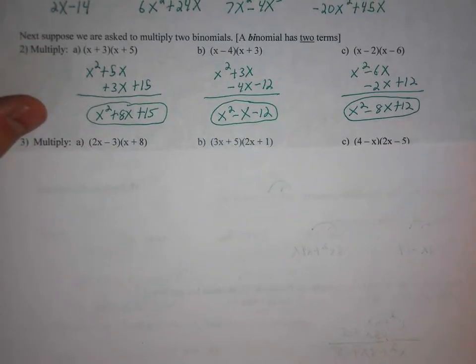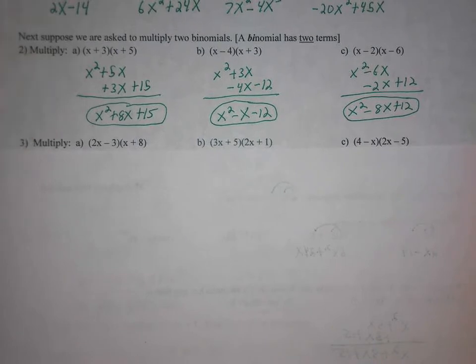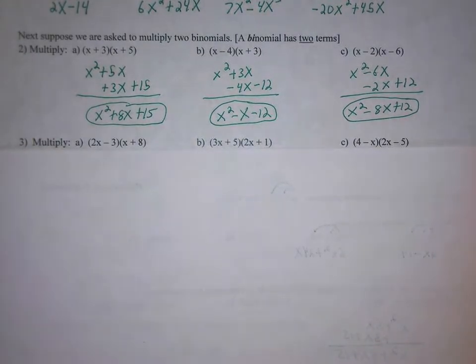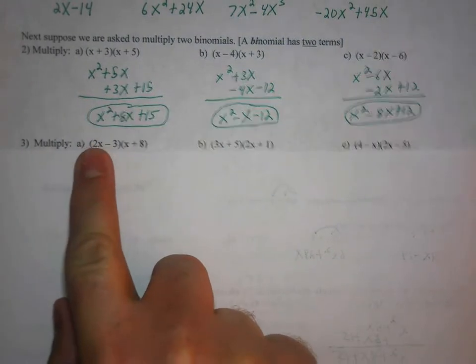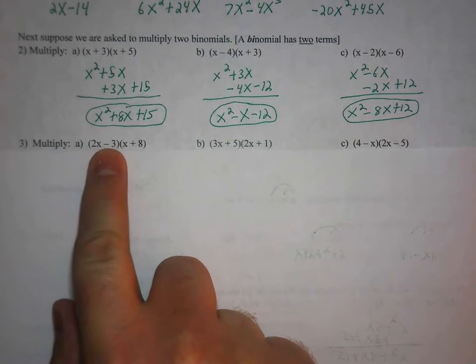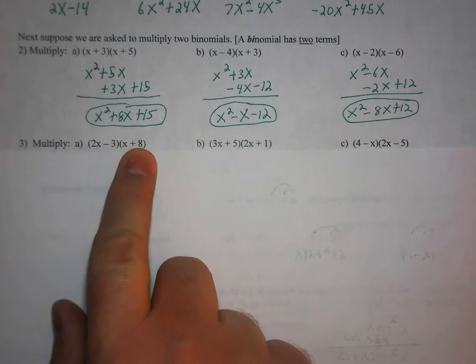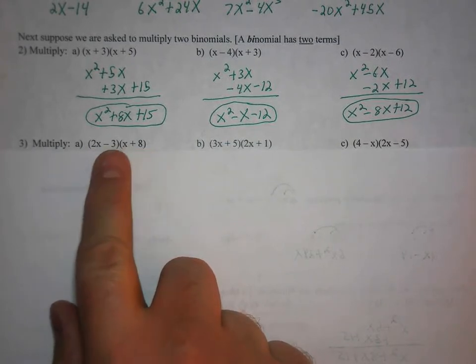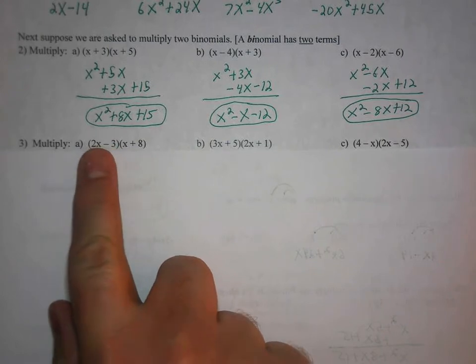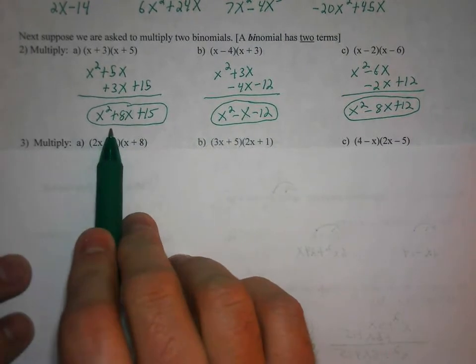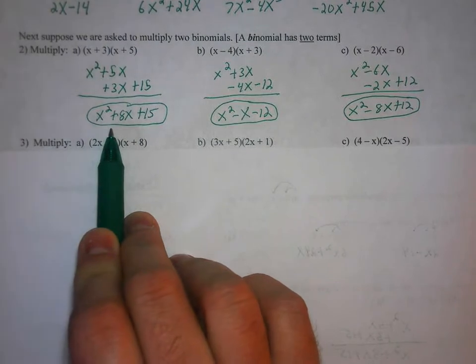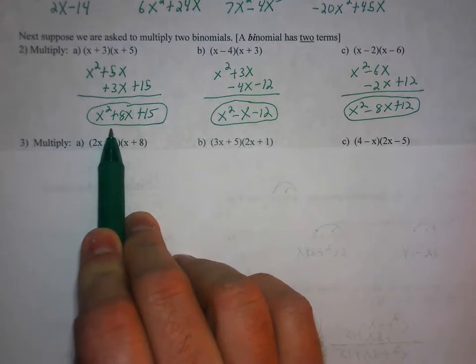Okay, and then moving along to number 3. Same direction, multiply. We still have binomials. The only difference now is that we have more going on with the terms. So 2x minus 3 times x plus 8. So again, if you do the same process and take the 2x. So again, I look at it as cover up that second term. And take 2x and distribute it to x plus 8. And that gives you 2x squared plus 16x.